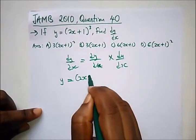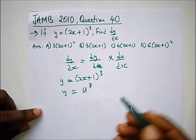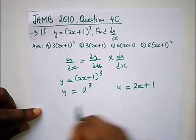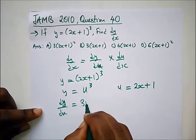Since y = (2x+1)³, y would be equal to u³ and u = 2x+1. Differentiating this, dy/du = 3u²